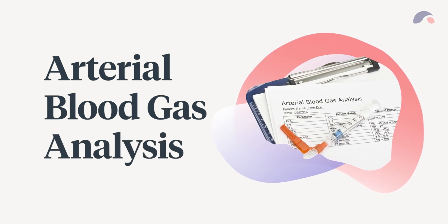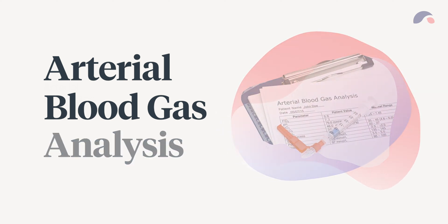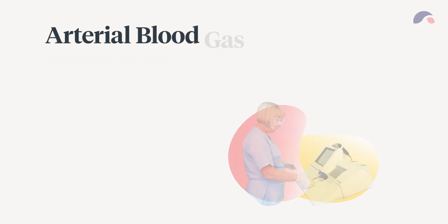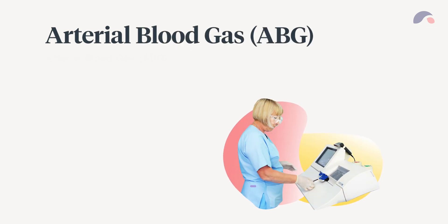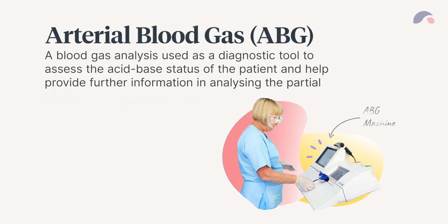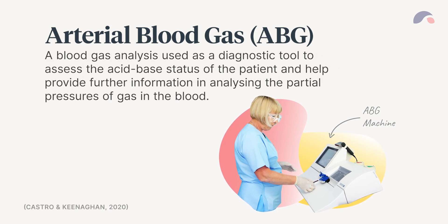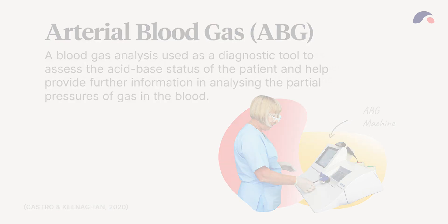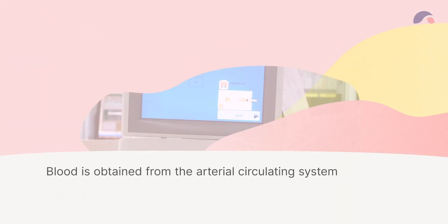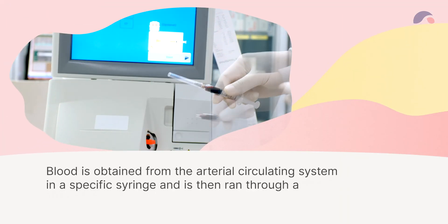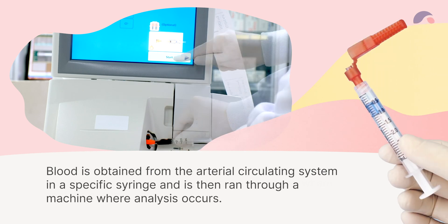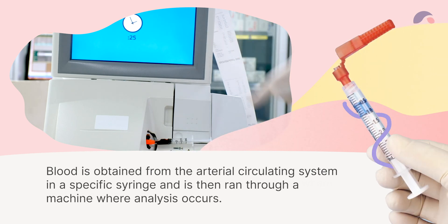Arterial blood gas, or an ABG, is a blood gas analysis used as a diagnostic tool to assess the acid-base status of the patient and help provide further information in analyzing the partial pressures of gas in the blood. Blood is obtained from the arterial circulating system in a specific syringe and is then run to a machine where analysis occurs.